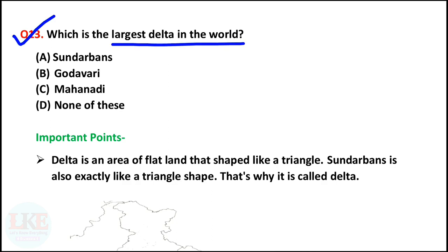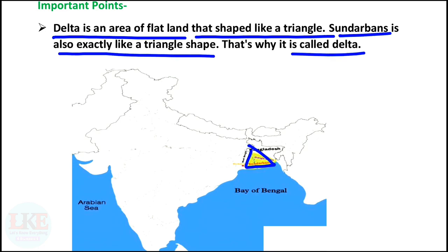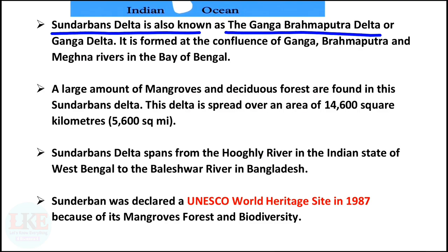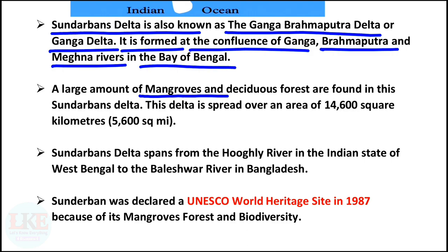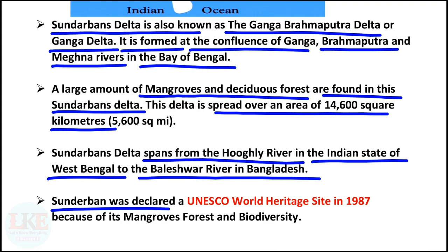Question number 13: which is the largest delta in the world? The right answer is option A: Sundarbans. Sundarbans delta is the largest delta in the world. Delta is an area of flat land shaped like a triangle, and Sundarbans is exactly triangle-shaped. Sundarbans delta is also known as the Ganga-Brahmaputra delta or Ganga delta. It is formed at the confluence of the Ganga, Brahmaputra and Meghna rivers in the Bay of Bengal. A large amount of mangrove and deciduous forests are found here. This delta spreads over 14,600 square kilometres, spanning from the Hoogli river in West Bengal to the Baleshwar river in Bangladesh. Sundarbans was declared a UNESCO World Heritage Site in 1987 for its mangrove forest and biodiversity.